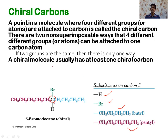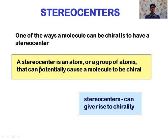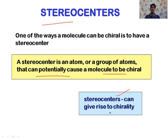In most cases, compounds that have a chiral carbon are chiral, but it is not the essential condition for chirality. A related term is stereocenter — similar to chiral carbon, a stereocenter is an atom or group of atoms that can potentially cause a molecule to be chiral. A stereocenter does not necessarily indicate a central carbon with four different groups; it may be an imaginary center in the molecule that defines the chirality.